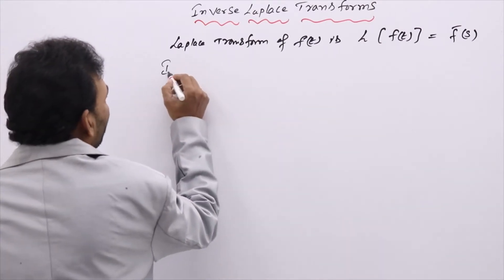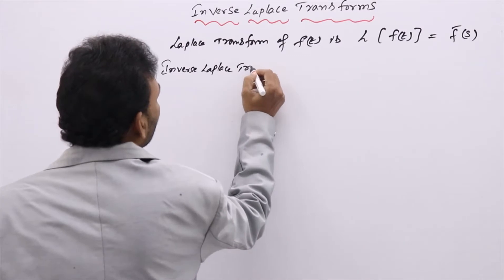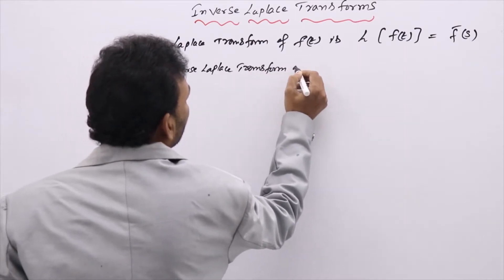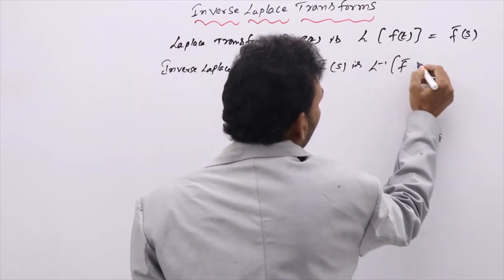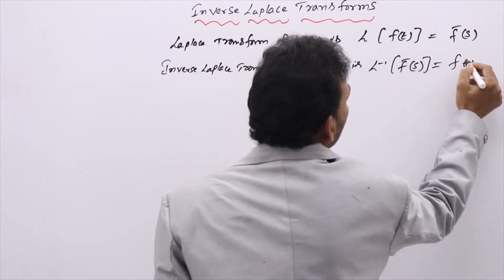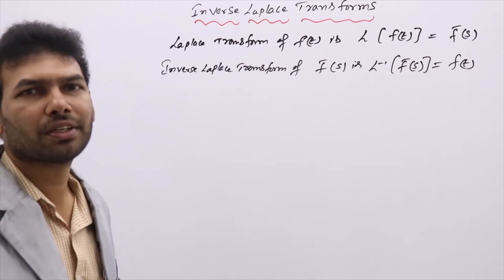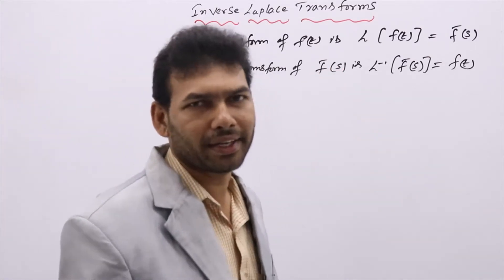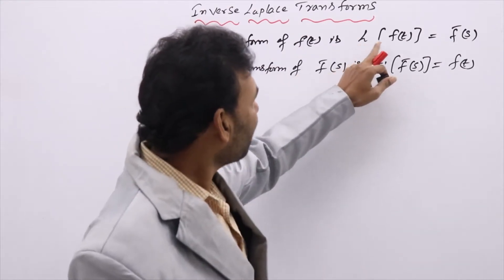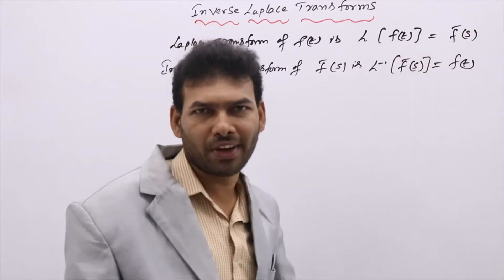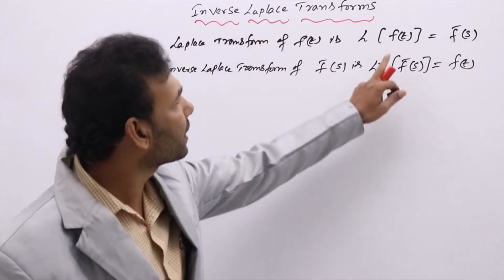Now, inverse Laplace transform. The inverse Laplace transform of F bar of s is denoted as L inverse of F bar of s, equal to F of t. So from this you can understand: Laplace transform converts a function of t into a function of s, and now we are going to apply inverse Laplace transform to a function of s to get back F of t.